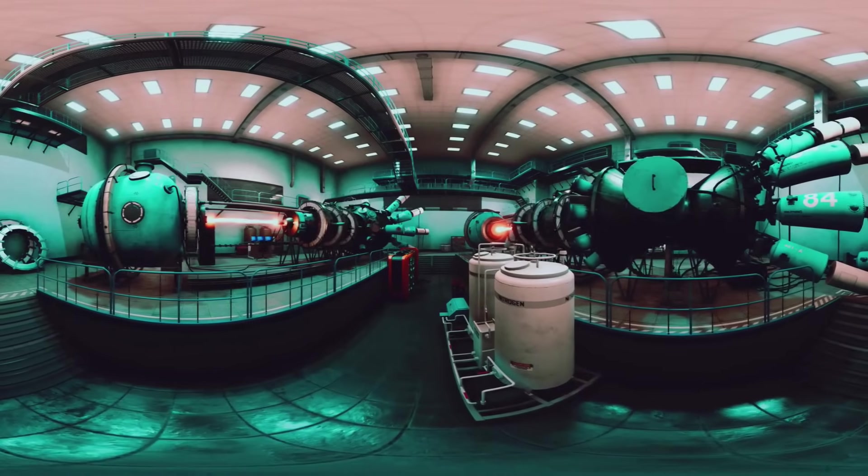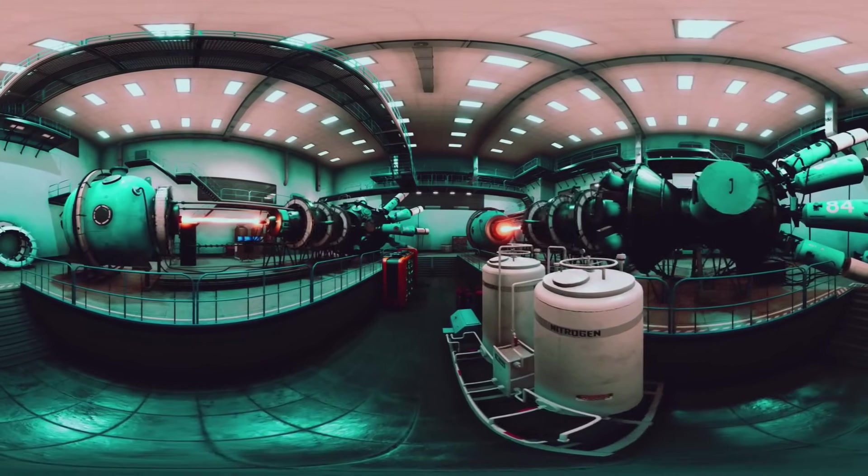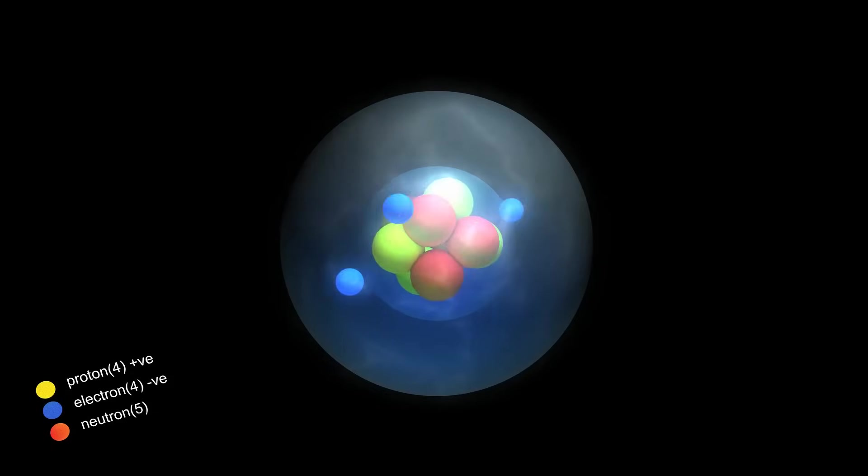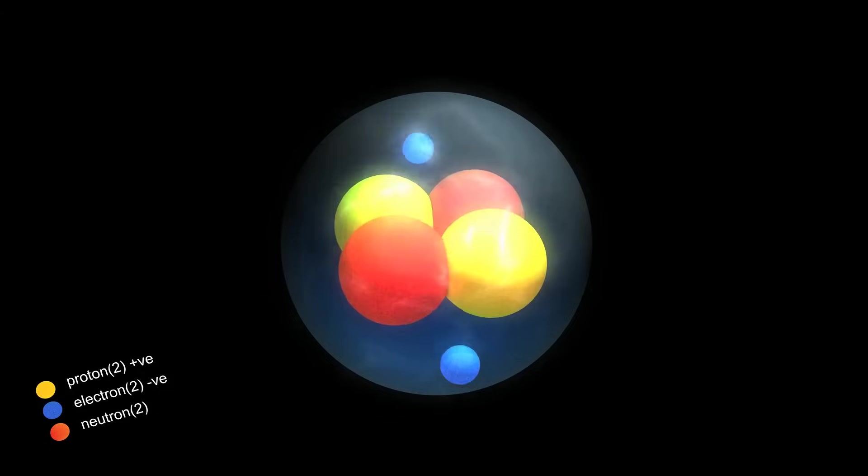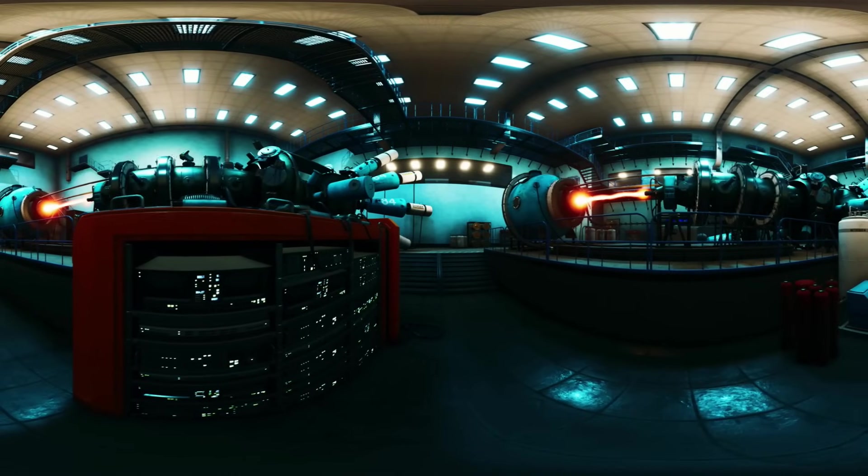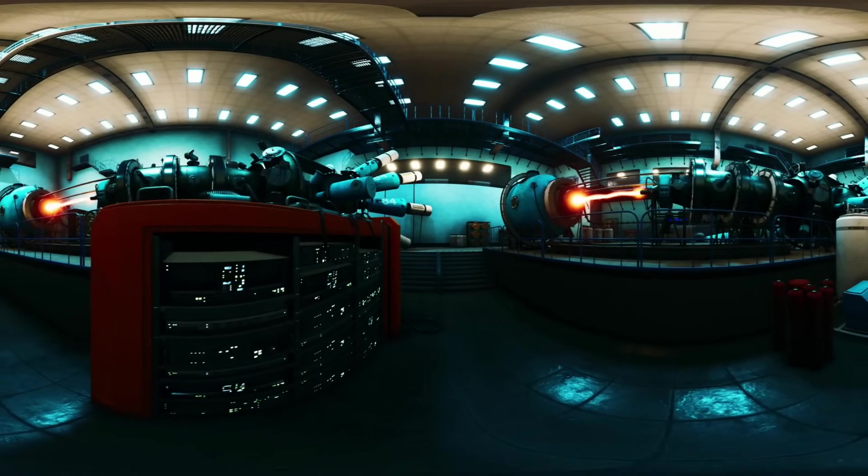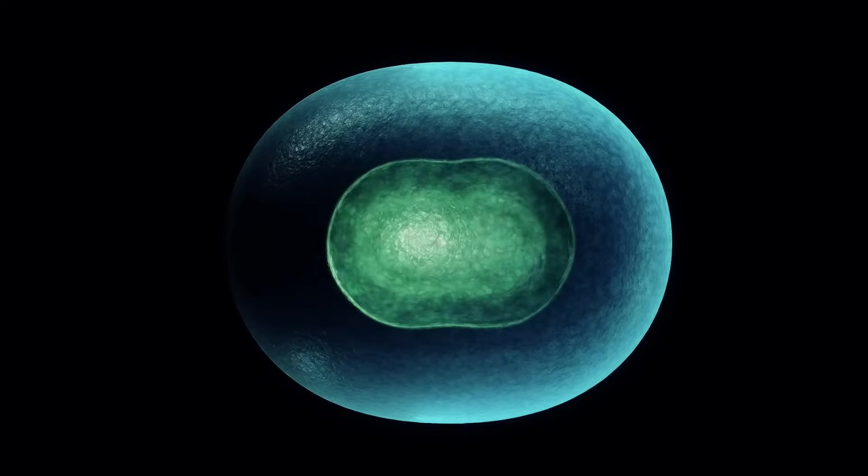When a neutron, traveling at just the right speed, hits a uranium-235 atom, the nucleus absorbs it, incorporating the neutron into its structure and becoming even more unstable. It's like adding one too many weights to a balancing scale. It stretches, vibrates violently, the nucleus struggling to contain the added energy. And then, unable to hold itself together, it splits into two smaller nuclei.